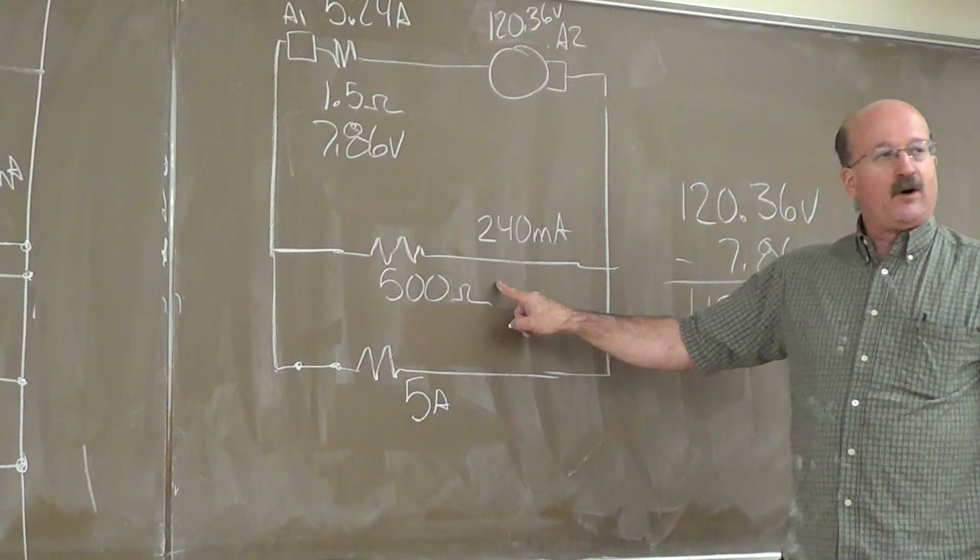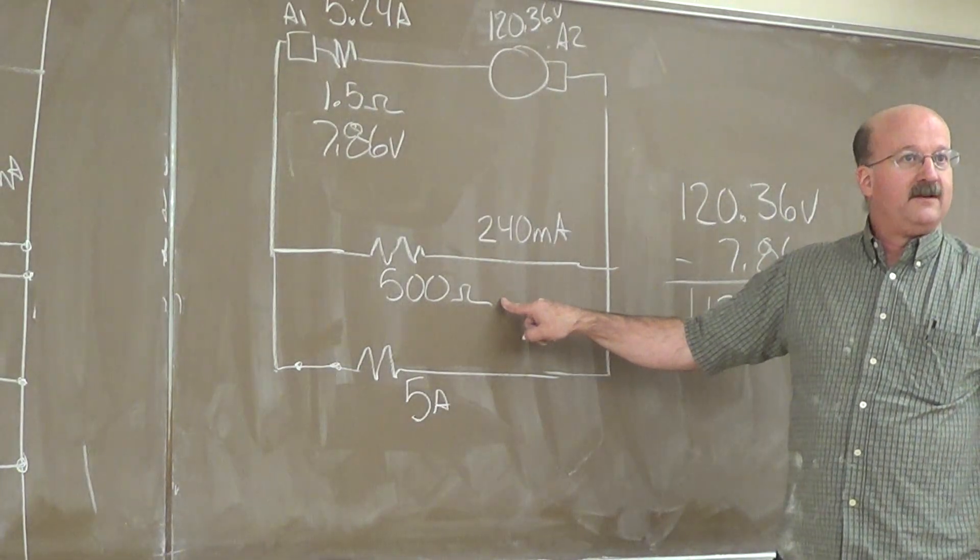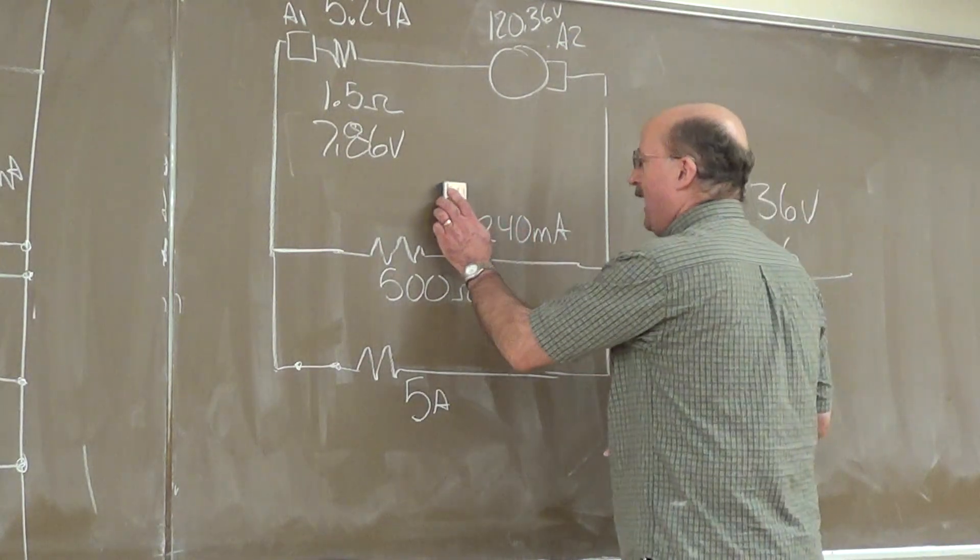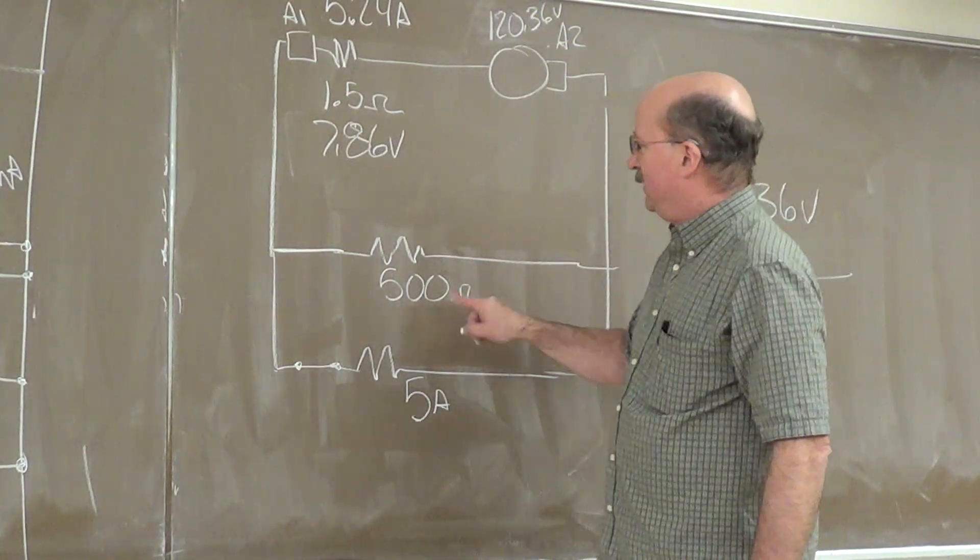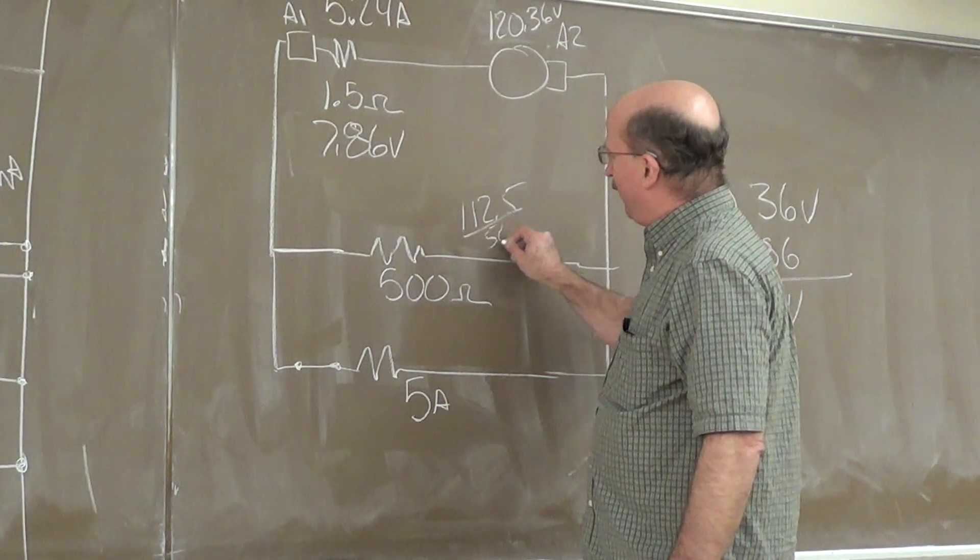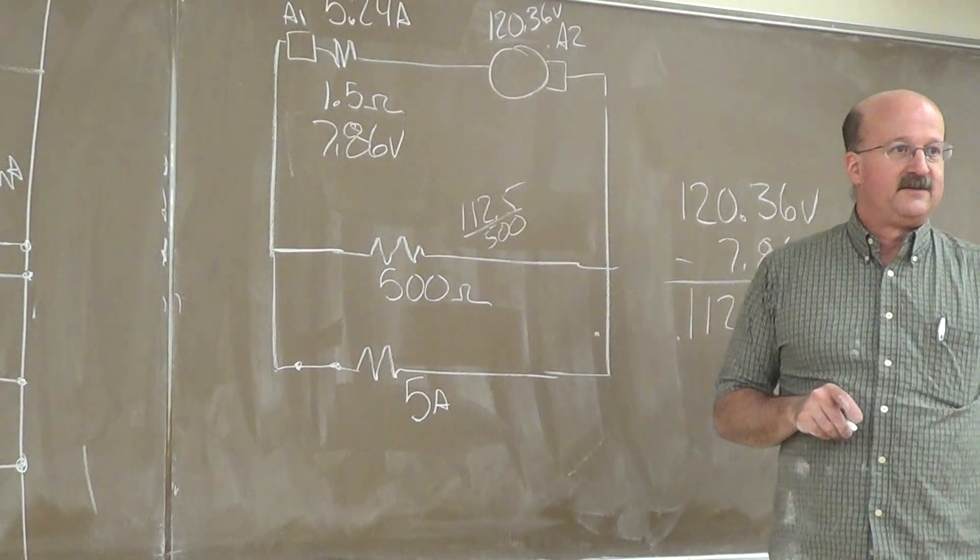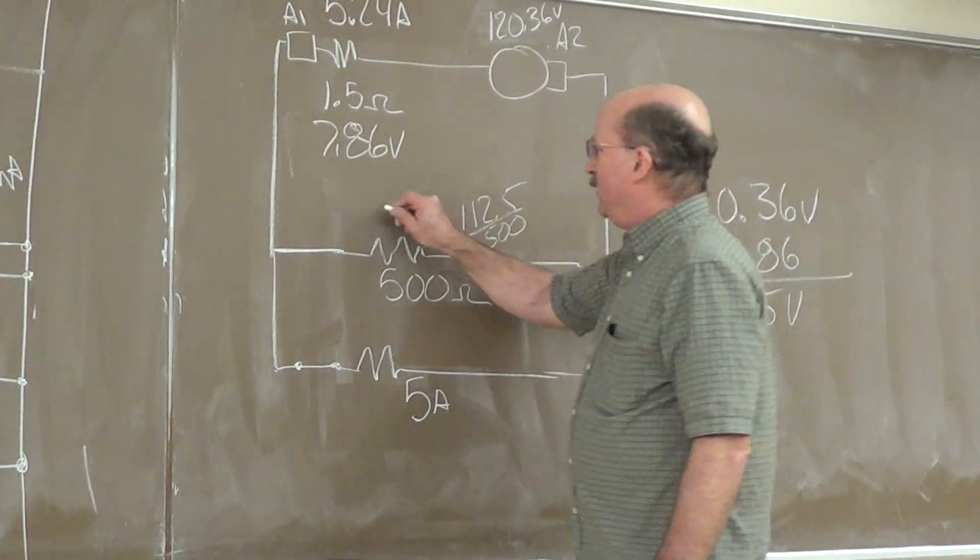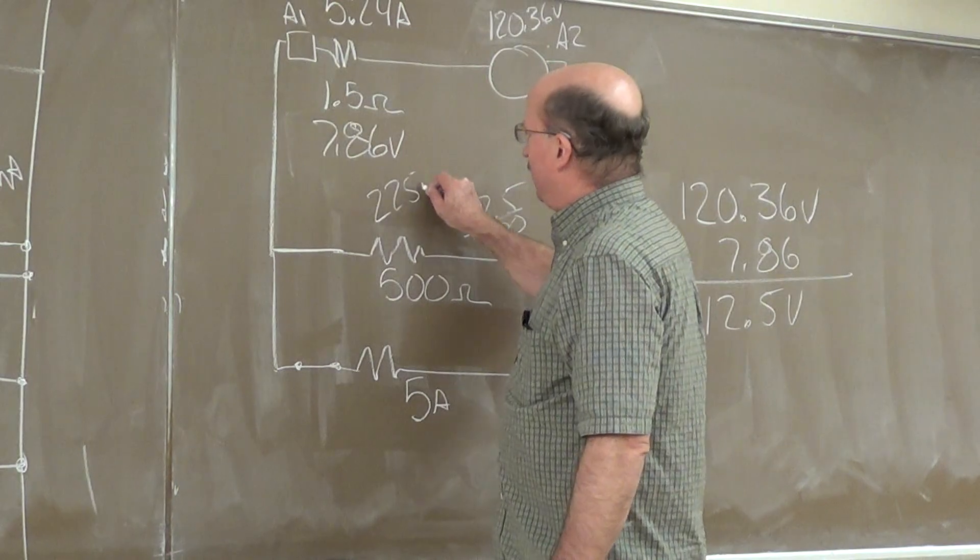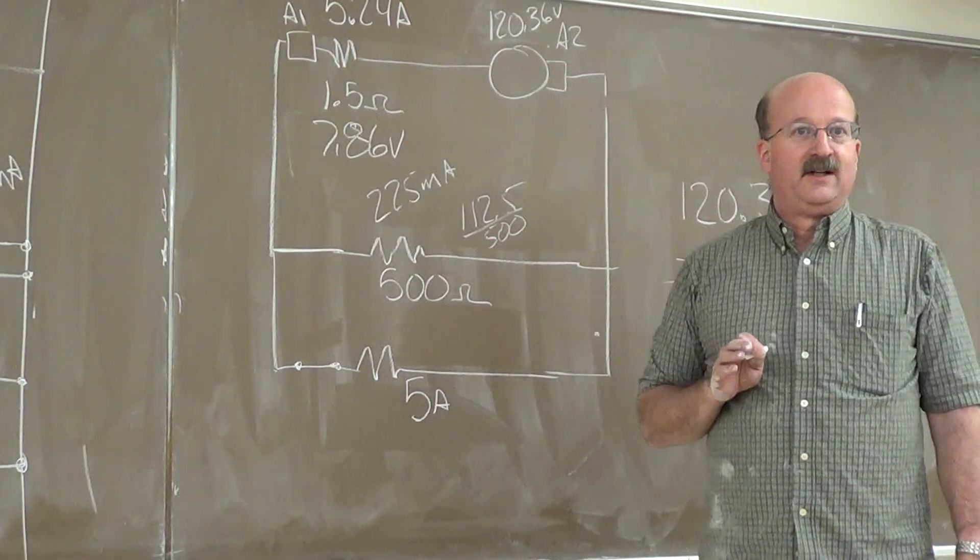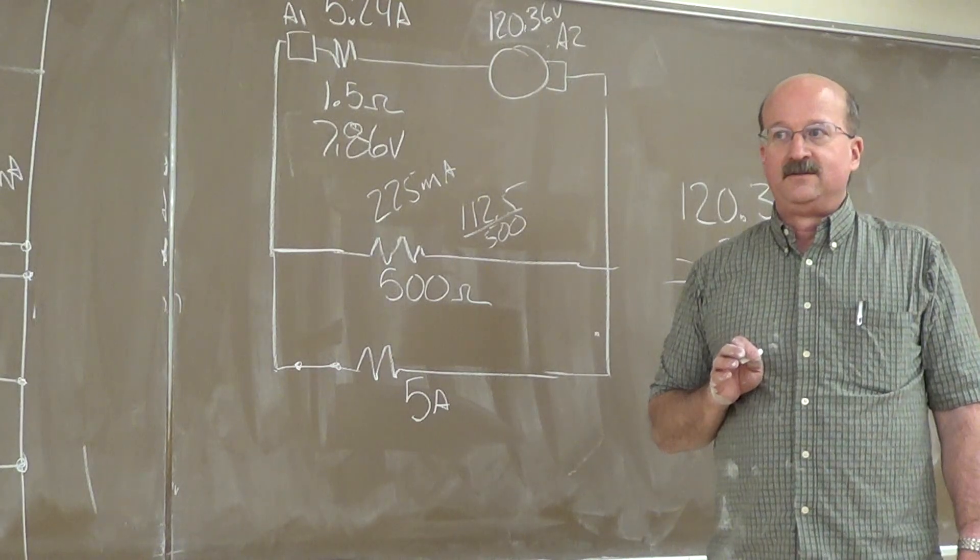We're at 112.5. We're not at 120 anymore, are we? So, what happens here? 112.5 divided by 500. What's our new current? 225 milliamps. 225 milliamps. A small change, so we're going to have a small reduction in output voltage.